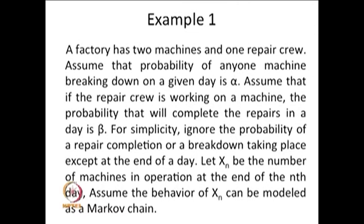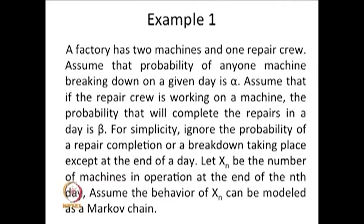Let Xn be the number of machines in operation at the end of the nth day. Assume that the behaviour of Xn can be modelled as a Markov chain. Based on the information available, a machine can break down and we have only one repair person; the probability that they complete a repair in a day is beta, and 1-beta is the probability they cannot complete the repair. The random variable Xn denotes how many machines are in operation at the end of the day.